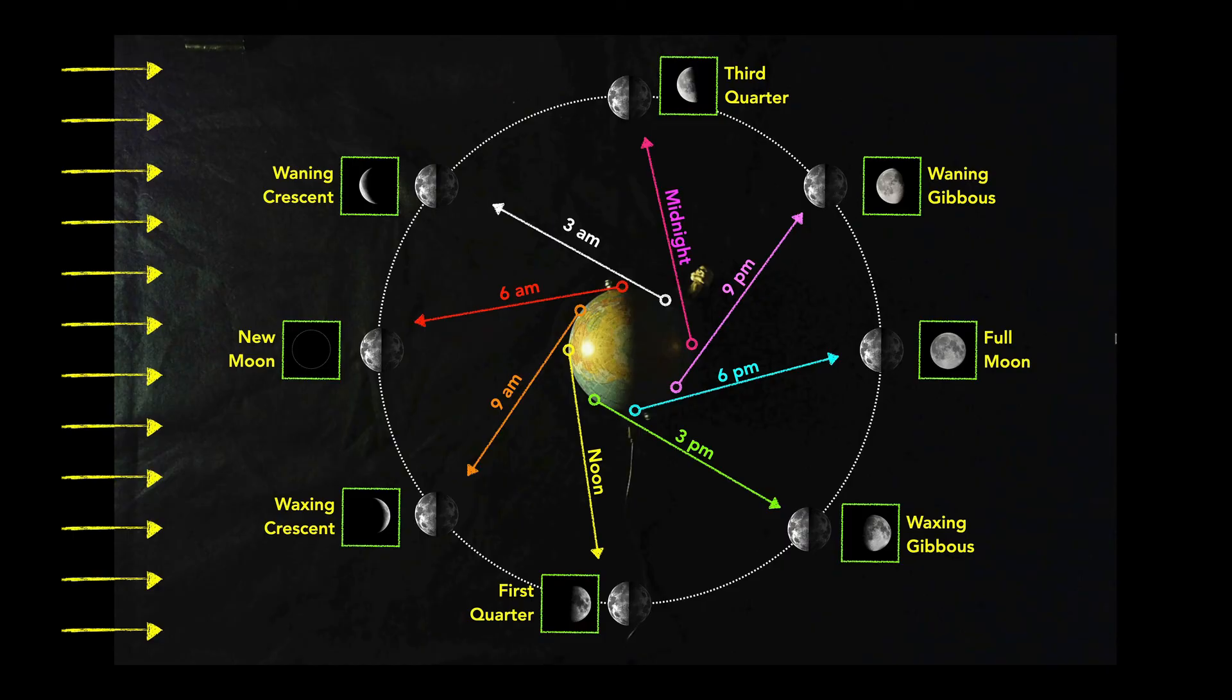So there's about three or four days between each of these phase pictures of the moon. And in that time, the moon rises about three hours later. So every night the moon rises, it's really actually about 45 minutes later than it did the night before.